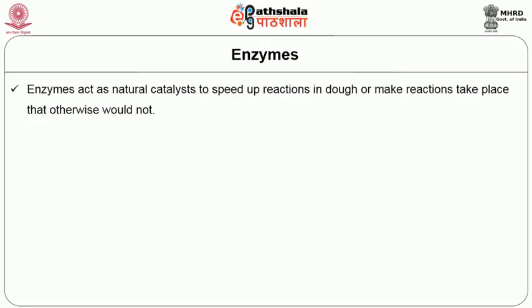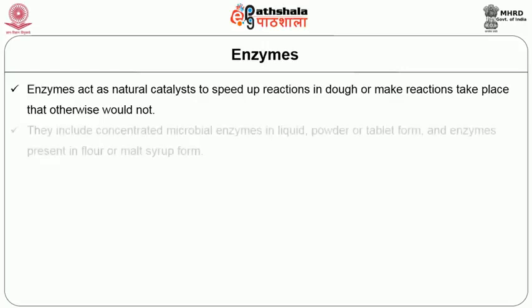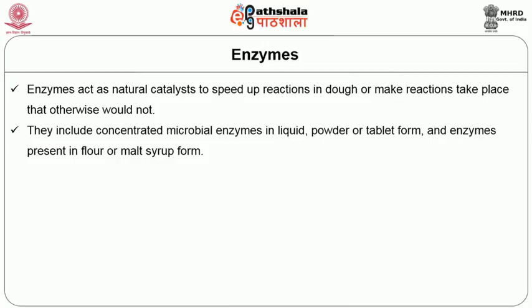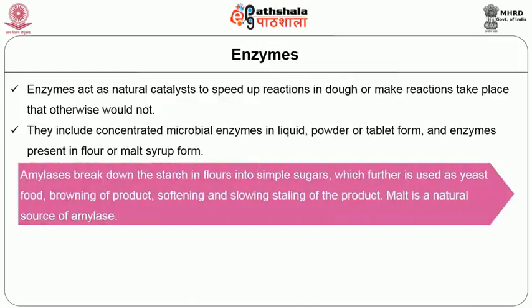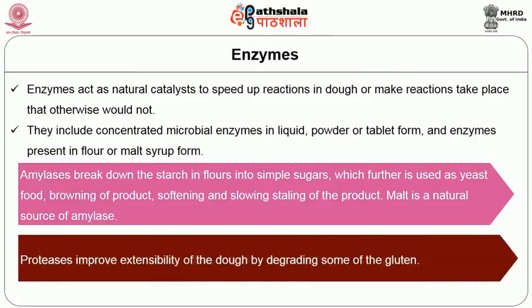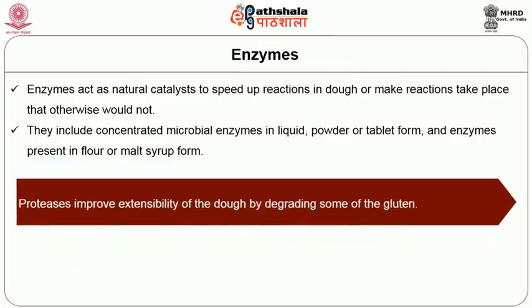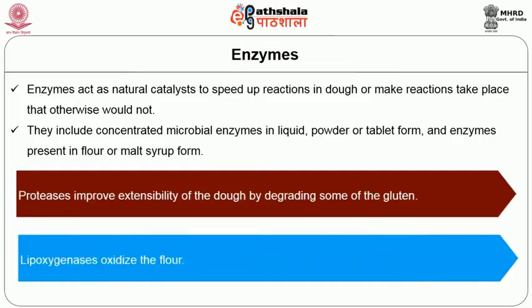Enzymes act as natural catalysts to speed up reactions in dough or make reactions take place that otherwise would not. They include concentrated microbial enzymes in liquid, powder, or tablet form, and enzymes present in flour or malt syrup form. The following enzymes are used in improving flour quality: amylases, which break down starch in flour into simple sugars used as yeast food, contributing to browning of product, softening, and slowing staling — malt is a natural source of amylase. Proteases improve extensibility of the dough by degrading some of the gluten. Lipoxygenases oxidize the flour.